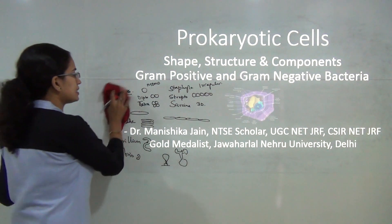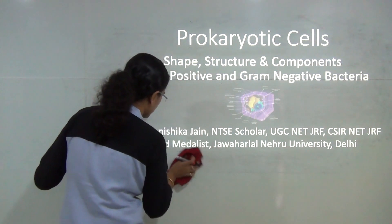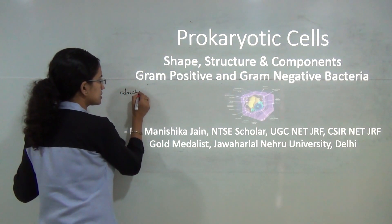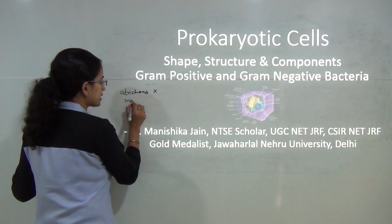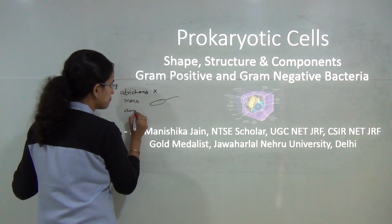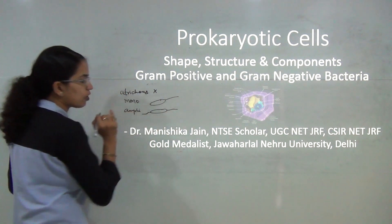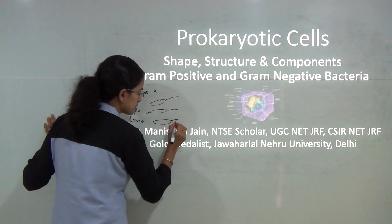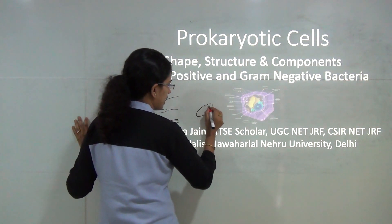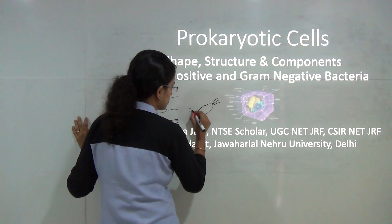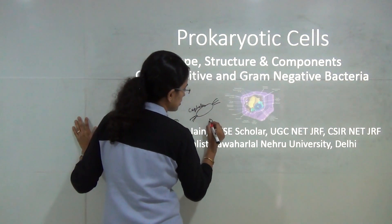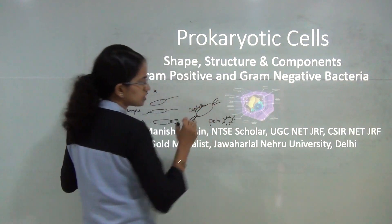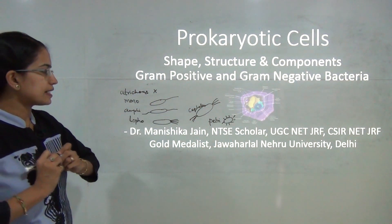Bacteria can have flagella or they cannot have flagella. Based on that, we use 'trichous' as the suffix. Atrichous means no flagella. Monotrichous means flagella on one end. Amphitrichous means flagella on both ends. Lophotrichous means a group of flagella at one end. And peritrichous means the flagella is distributed throughout the body.